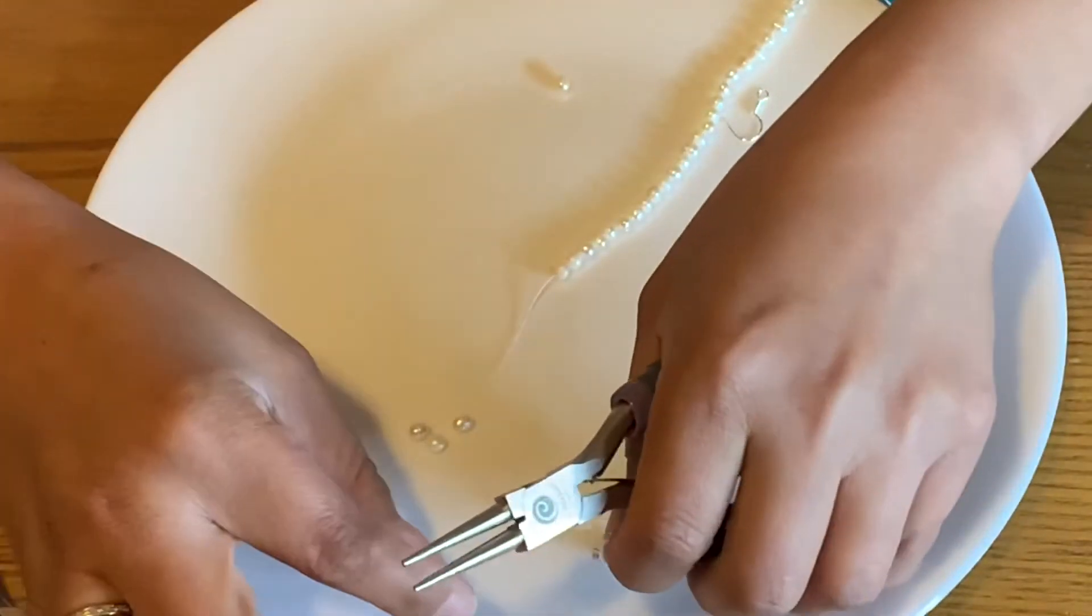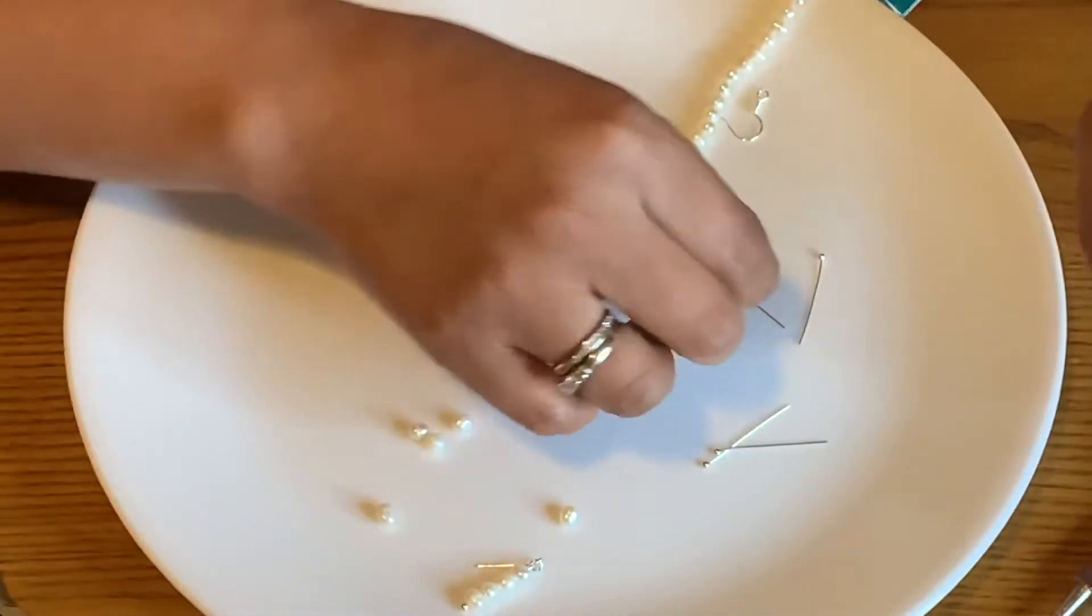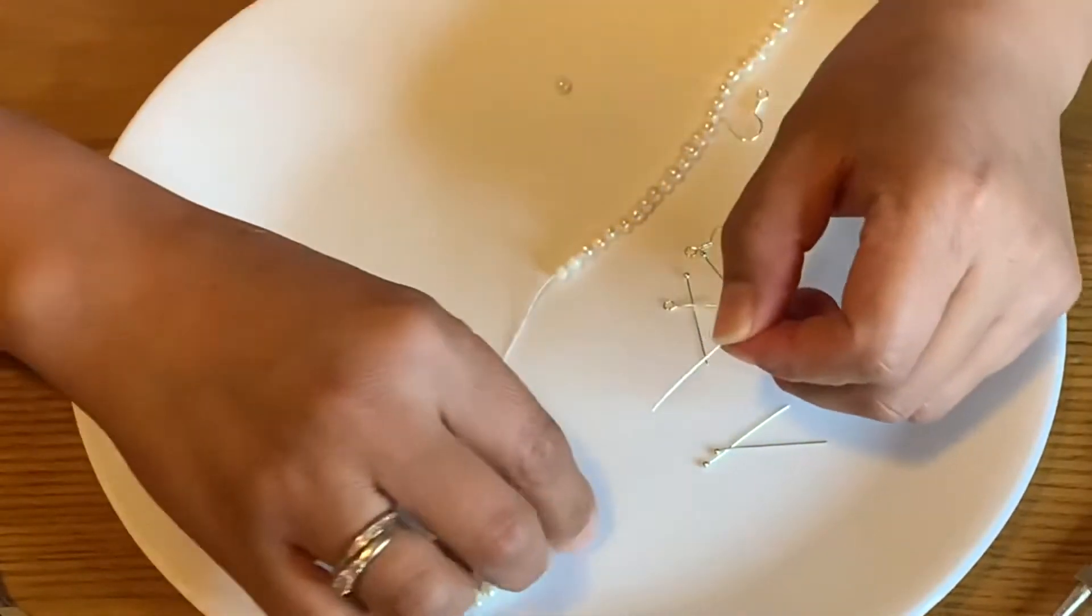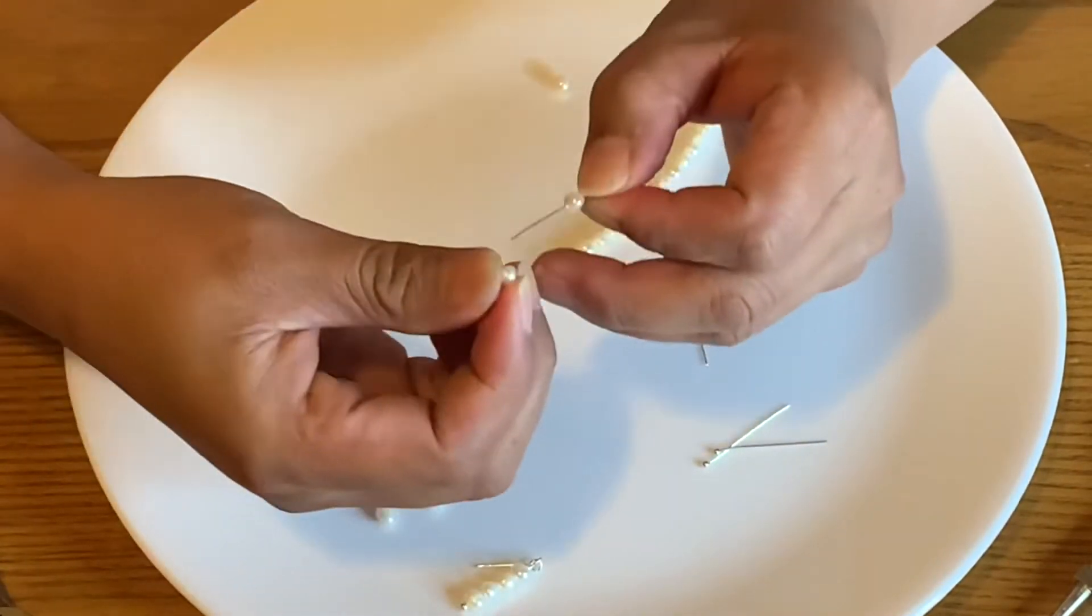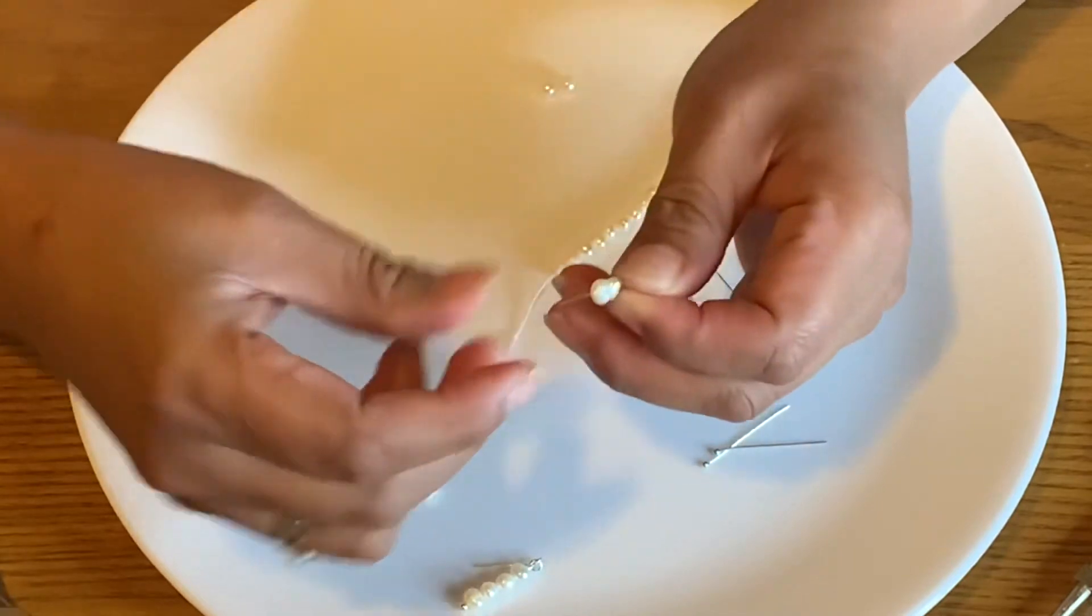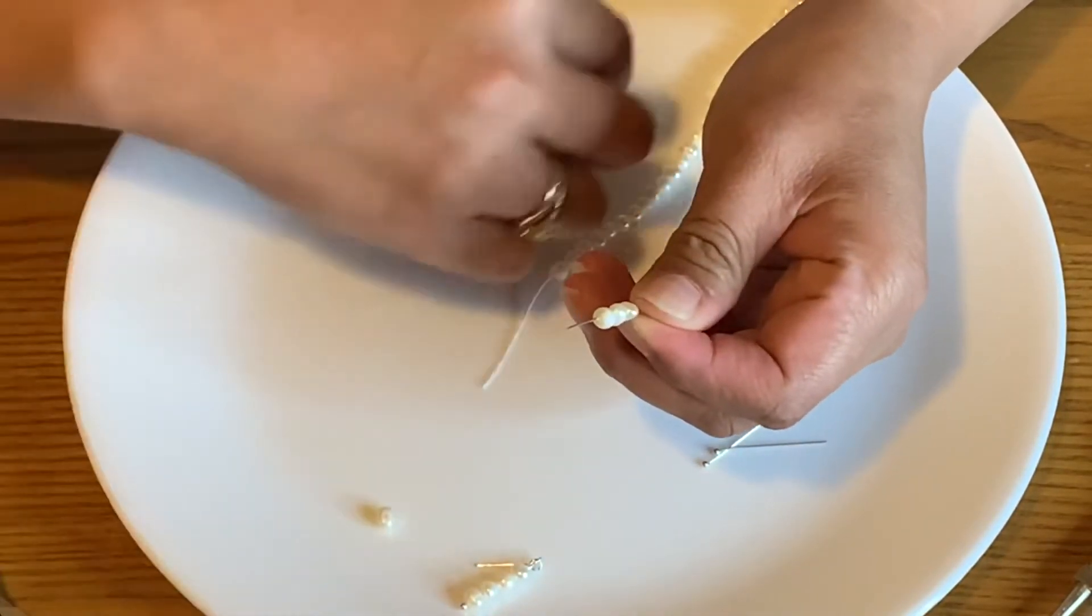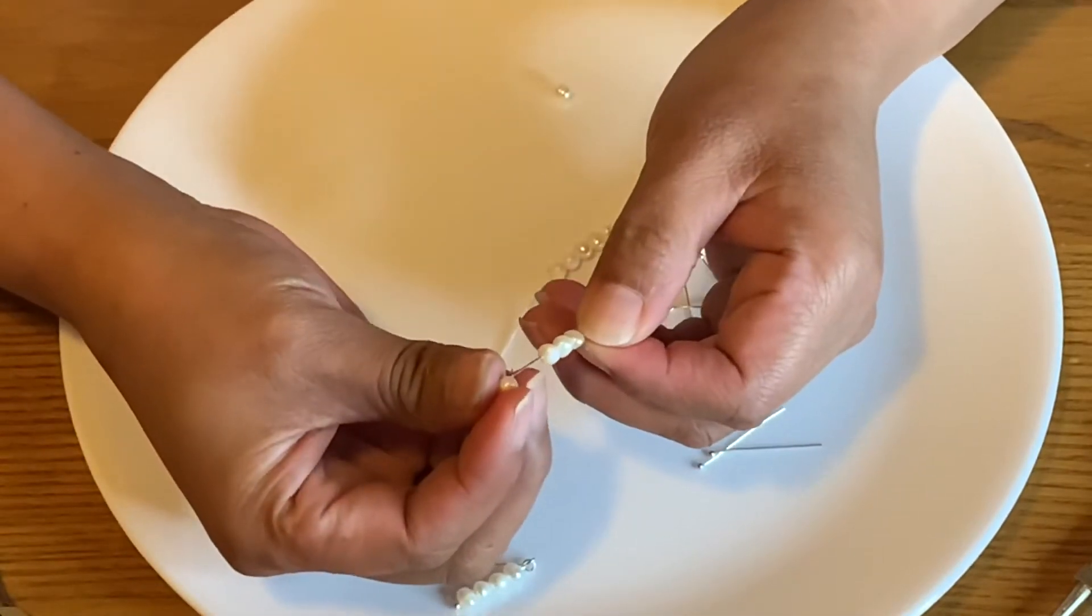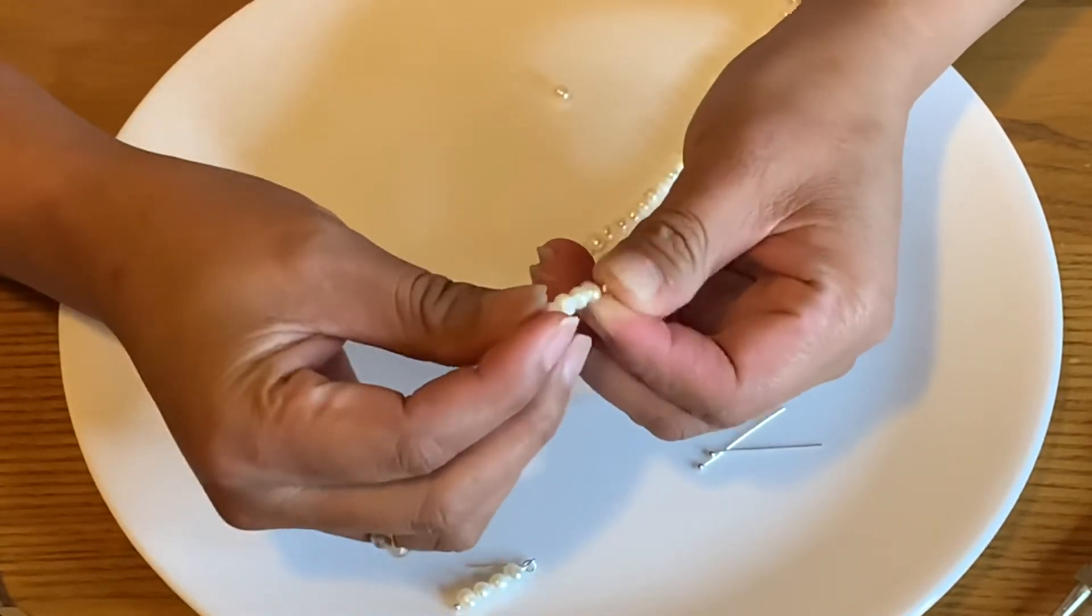We're going to try to put it right there. All right, so just like that, and then we're going to put more. This is a white color of pearl.